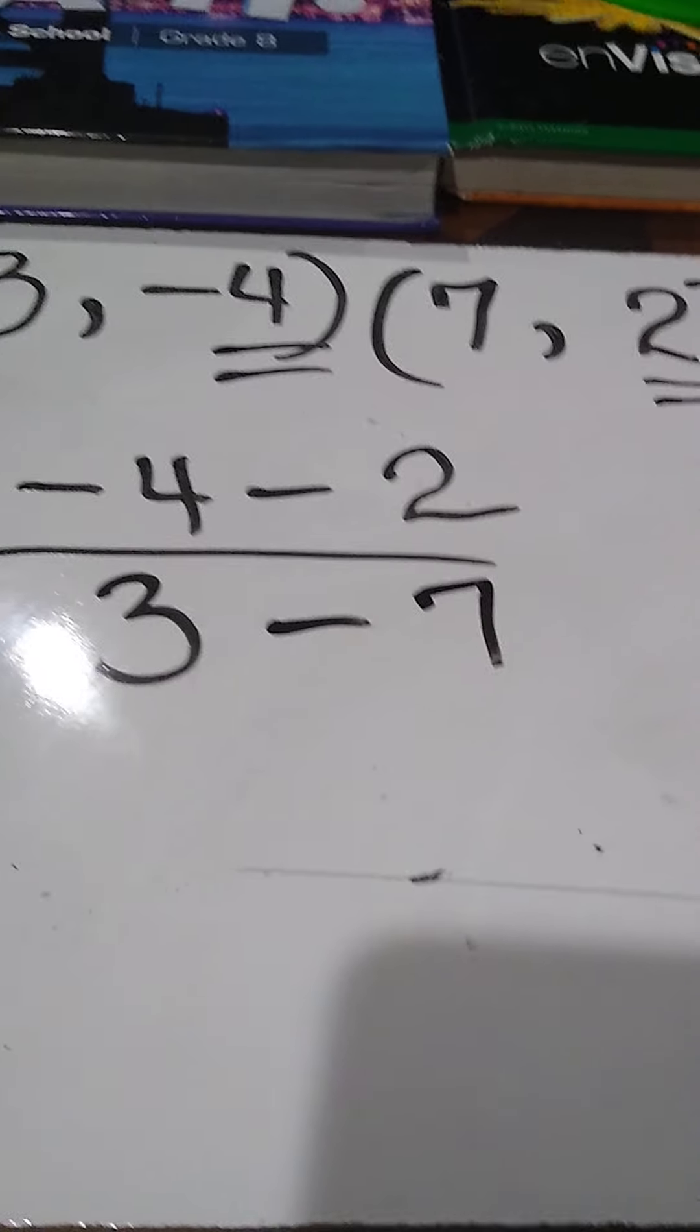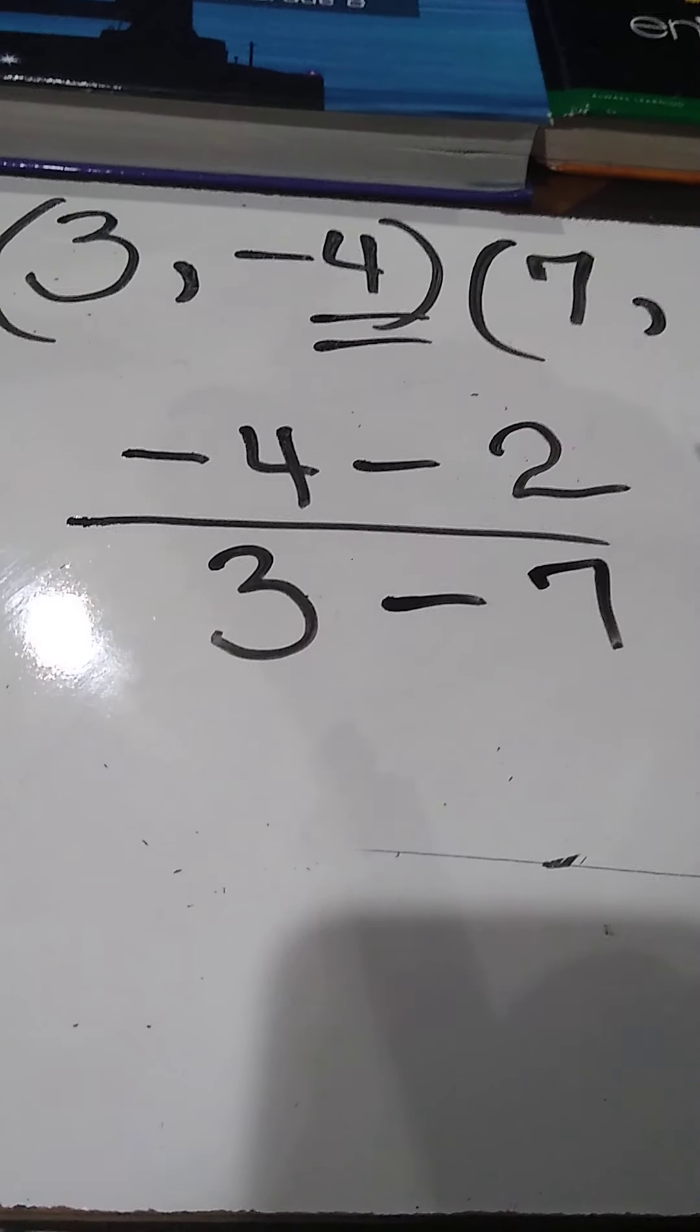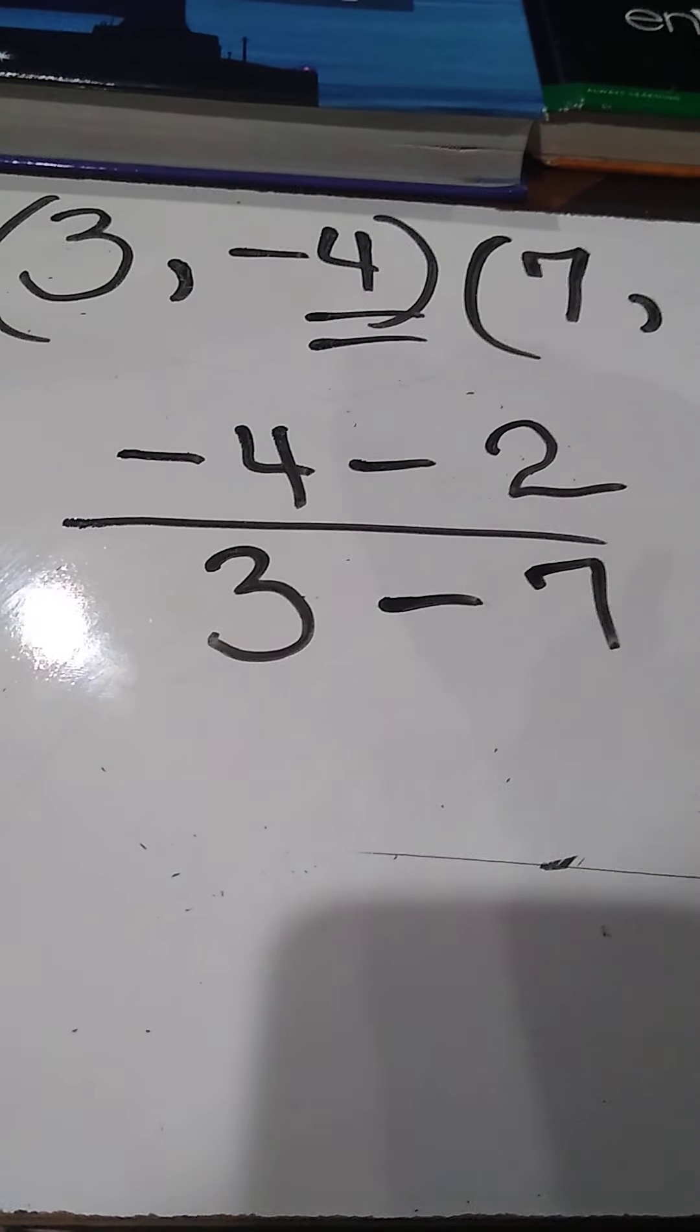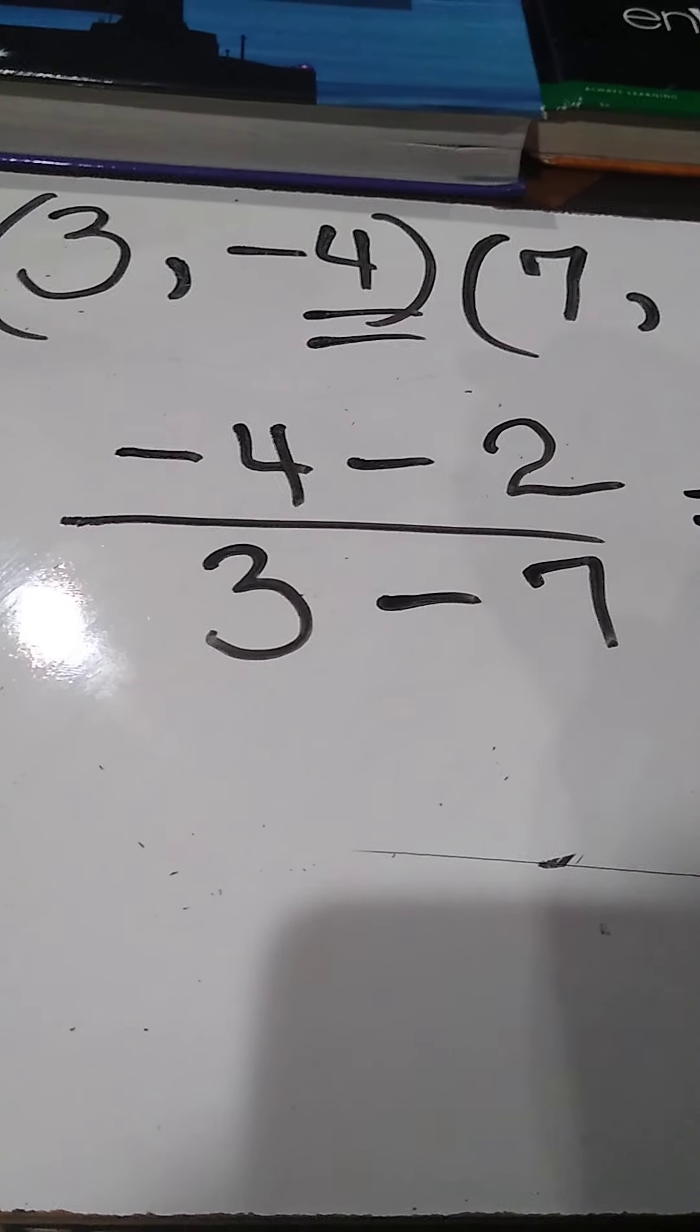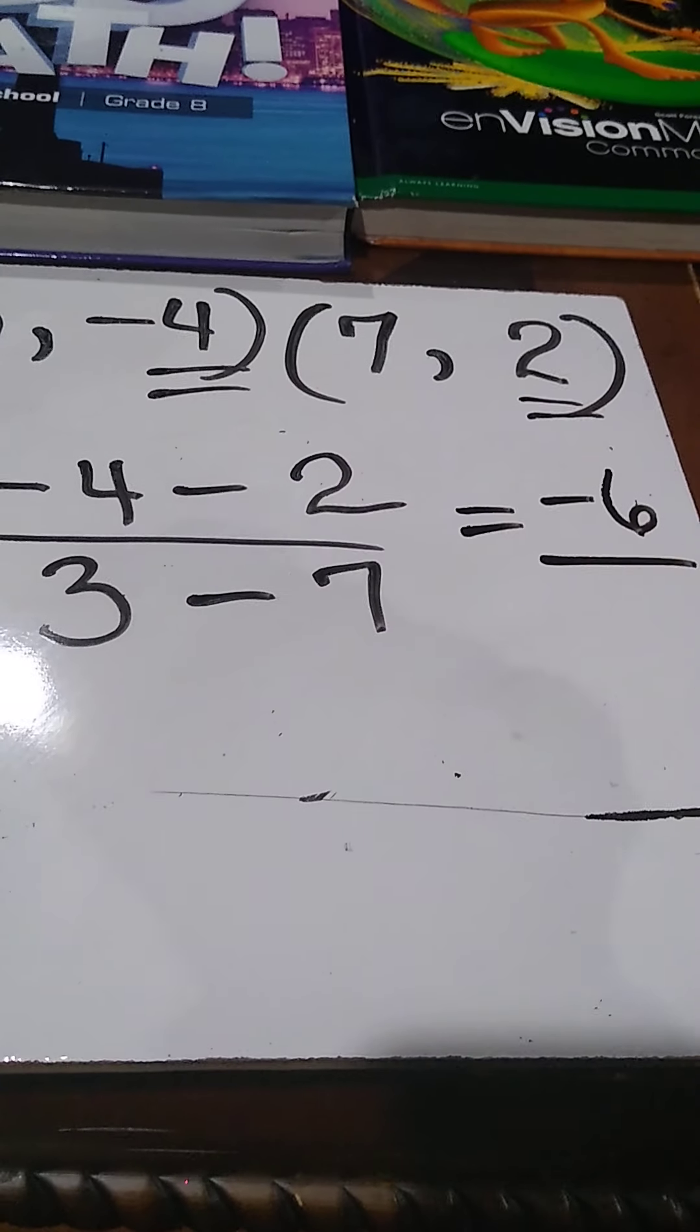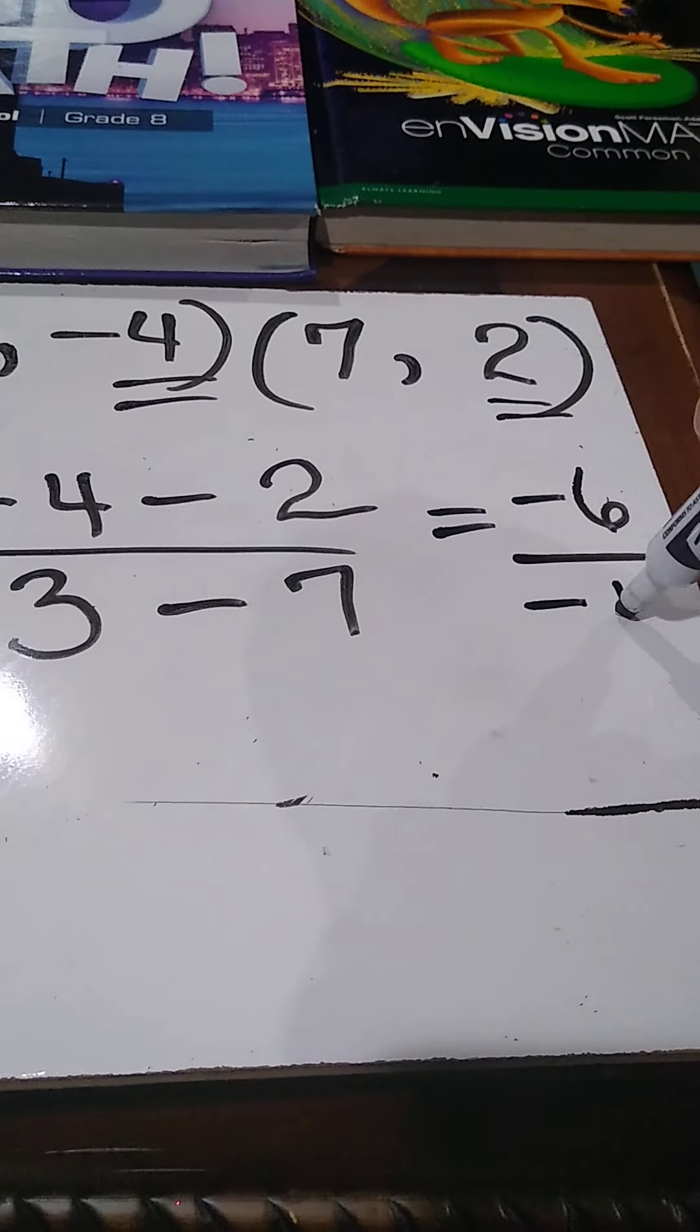Now I'm going to subtract. Notice I have -4 minus 2. We have two negatives, so we're going to add. It becomes -6. Next, 3 take away 7 gives me -4.